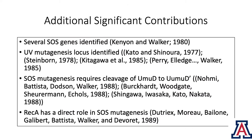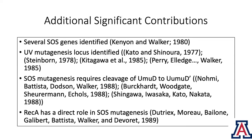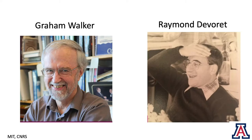Additional significant contributions — there are several. A lot of SOS genes were identified by Kenyon and Graham Walker. The UV mutagenesis locus, UMU, was identified. UMU turns out to be a polymerase. SOS mutagenesis requires UMUD cleavage of UMUD to UMUD prime, the SOS polymerase. And RecA has a direct role in SOS mutagenesis. Perhaps the best paper on that is the Dutrex paper with Raymond Devereux, a dear friend who passed away earlier this year.